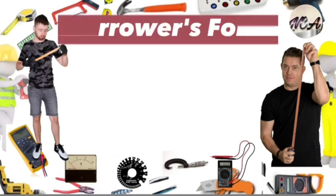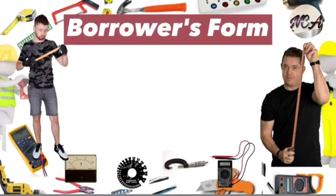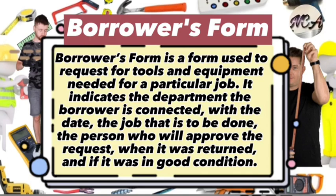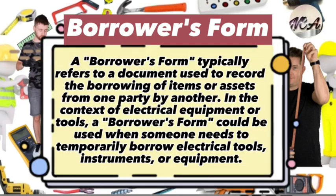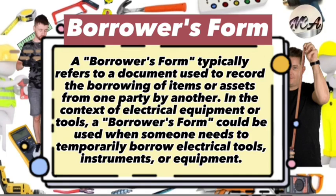The last form is the borrower's form. The borrower's form is used to request tools and equipment needed for a particular job. It indicates the department the borrower is connected with, the date, the job to be done, the person who will approve the request, when items were returned, and if they were in good condition. A borrower's form records the borrowing of items or assets from one party by another, and in the context of electrical equipment, it is used when someone needs to temporarily borrow electrical tools, instruments, or equipment.